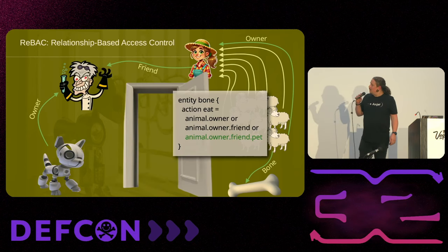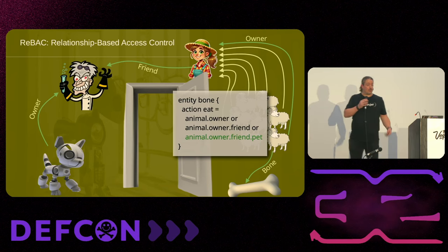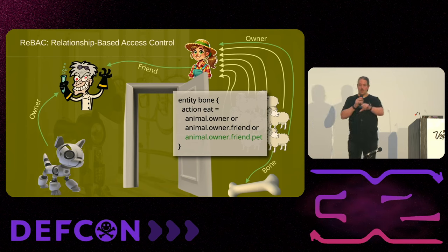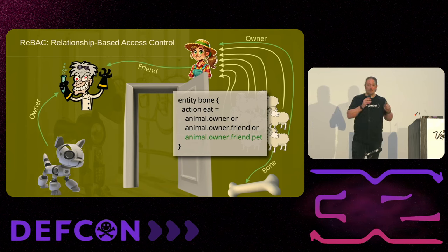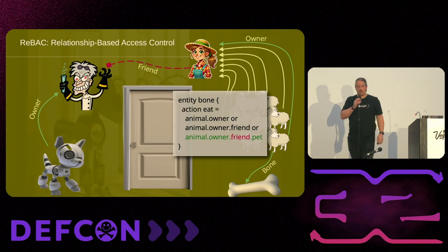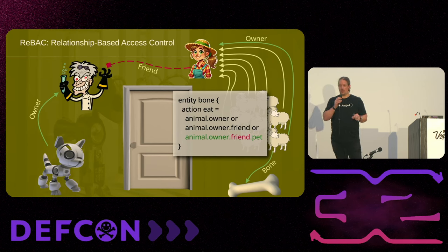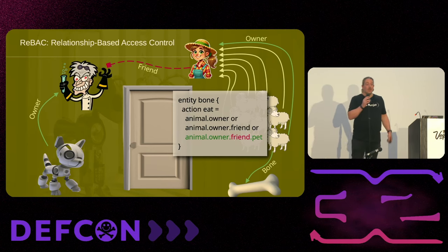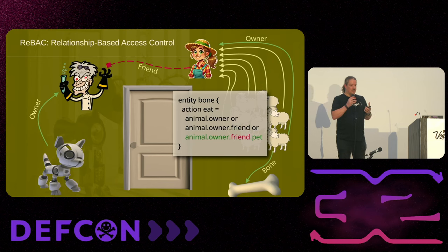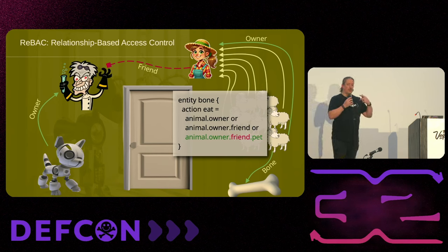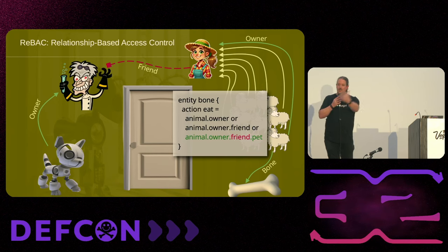Now say one day the farmer and the mad scientist break friends — they're no longer friends with each other. Suddenly that relationship is broken. Nothing has changed about the bone, and nothing has changed about Liam. But the relationship is broken, therefore the 'friend' component of that rule breaks. The only rule that allowed Liam access to that bone is now broken, and the door shuts. That's what relationship-based access control is about — it's about what actions can be performed on a resource based on a set of rules that relates lots of resources together.